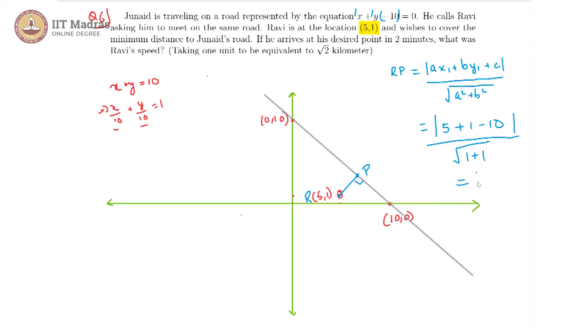We get modulus of minus 4 divided by root 2, which is equal to 4 by root 2, which is then equal to 2 root 2 units.